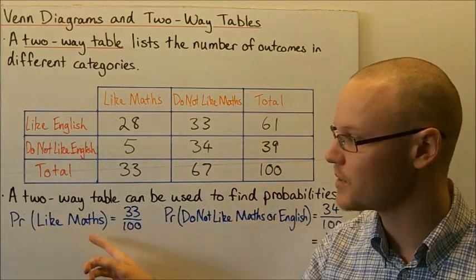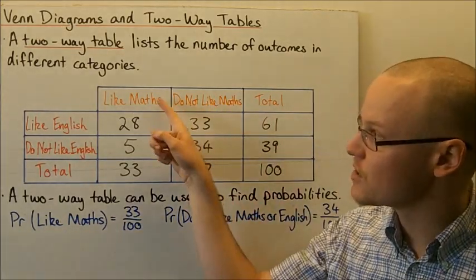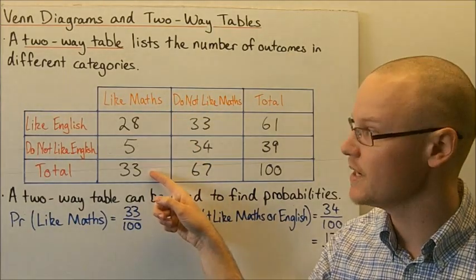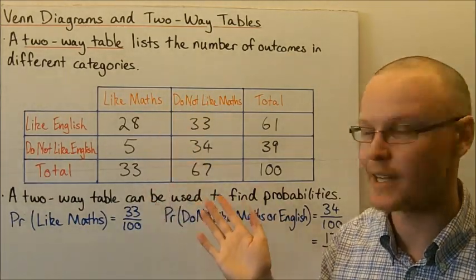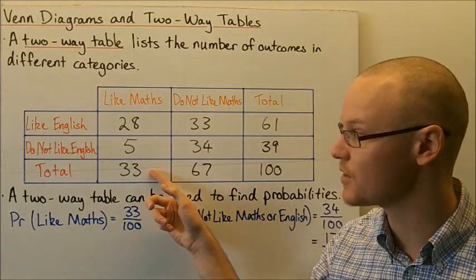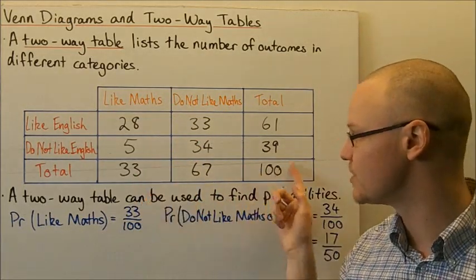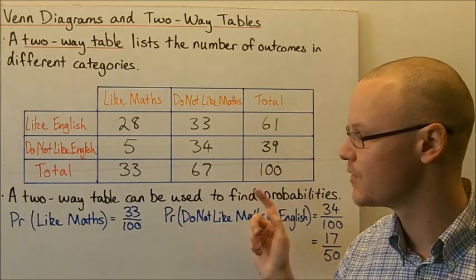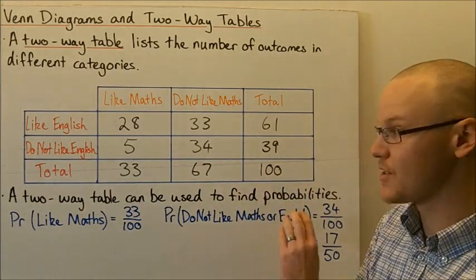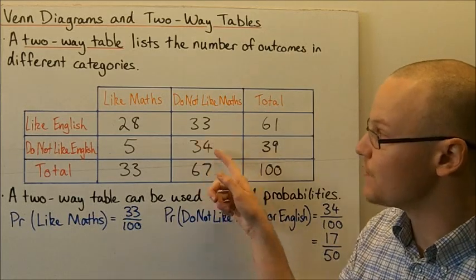The probability that a student likes Maths: all of the students that like Maths total 33. It doesn't matter whether they like English or not — the total number of students that like Maths is 33 out of the total number of students surveyed, which was 100. The probability of not liking Maths or English corresponds to 34 out of 100.